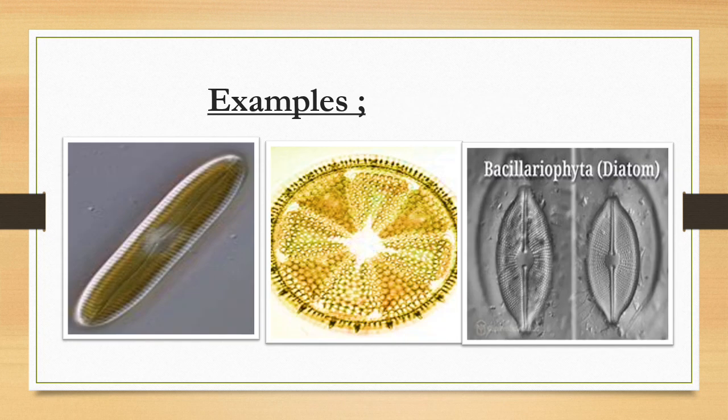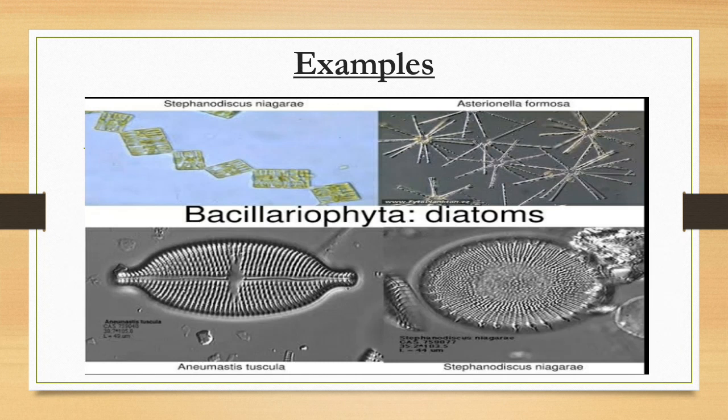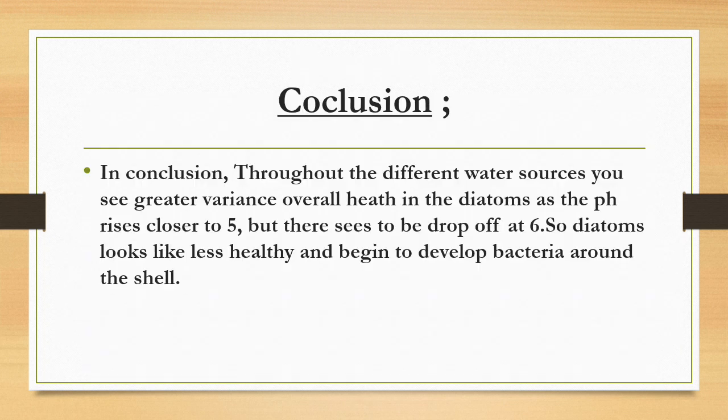Examples of Bacillariophyta or diatoms can be seen in the diagram. In conclusion, throughout different water sources, there is greater variance in the overall health of diatoms. As pH rises closer to 5, there is a drop-off at 6, where diatoms appear less healthy and begin to develop bacteria around the shell.